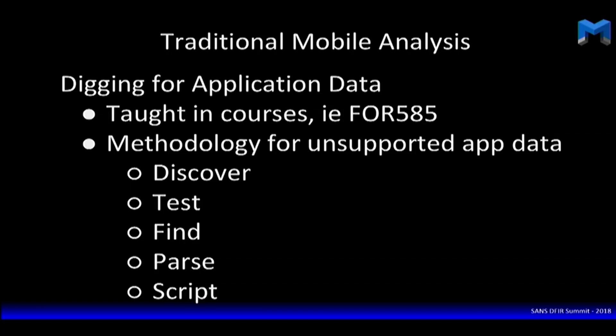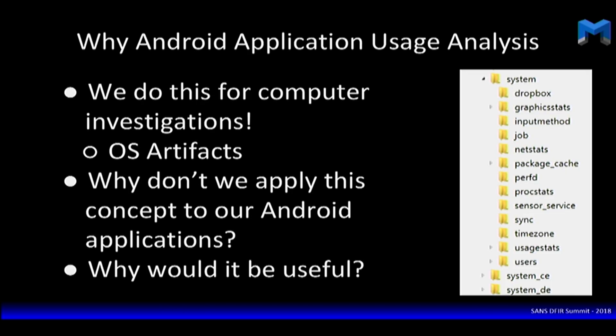It's really important to dig deeper — this concept is taught in Heather, Lee, and Cindy's course 4585. We talk about discovering new types of apps because there are over 6 million apps on the app store, so there's going to be more data. We discuss testing, finding, and parsing that data and writing scripts so we know what that data is. But we don't tend to look at file systems as much as we do in computer investigations. Those OS artifacts that exist in Android can really help you timeline things in situations when other artifacts might not exist.